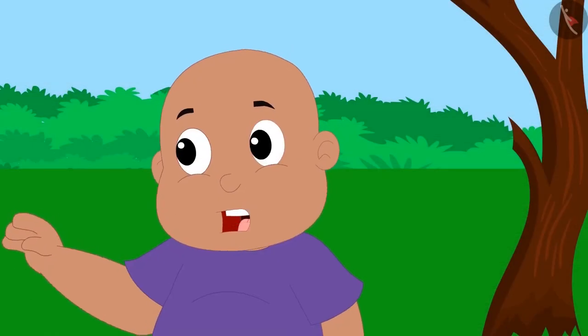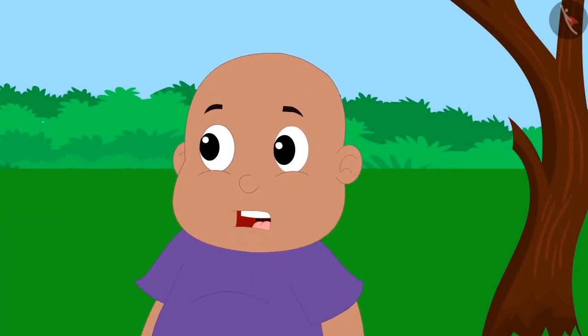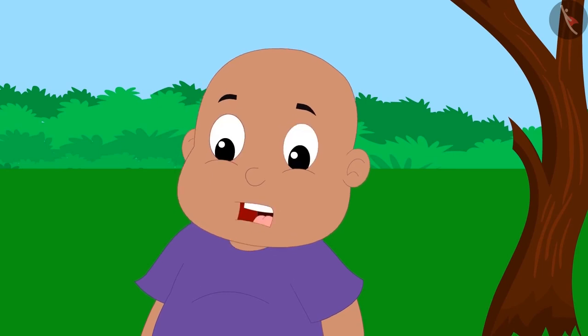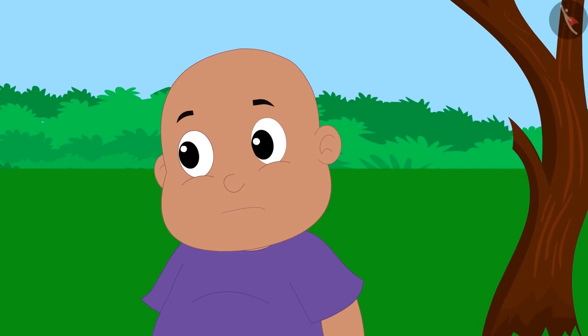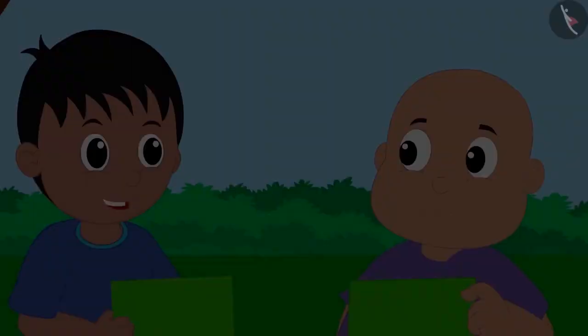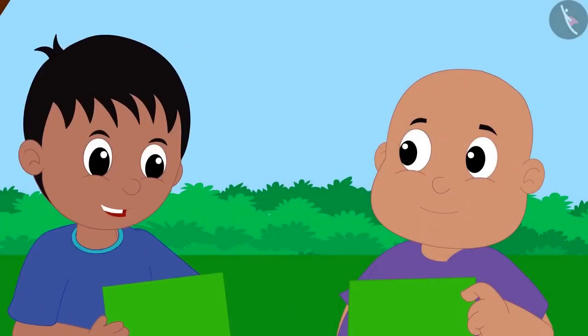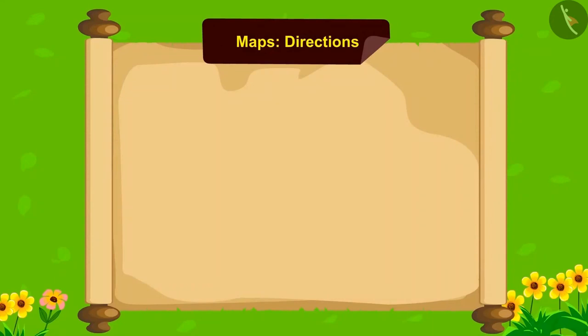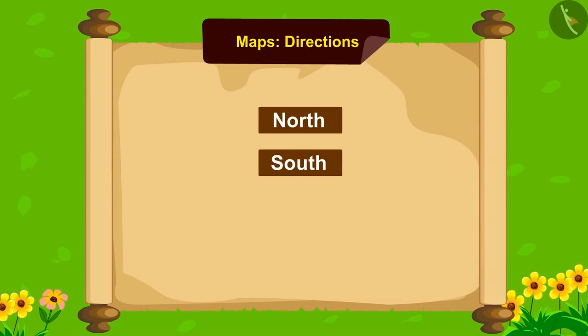Bablu asks how they are supposed to use the compass and what the directions are. Raju explains that there are four cardinal directions: North, South, East, and West.